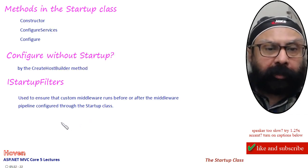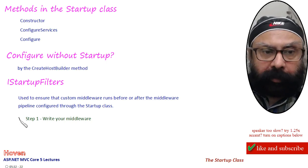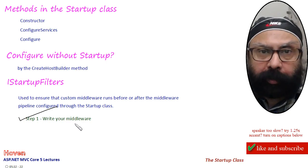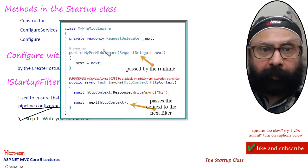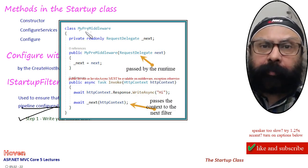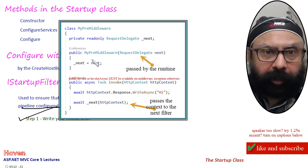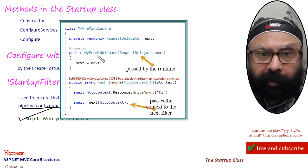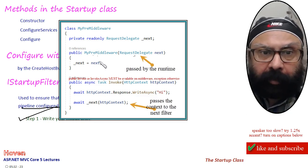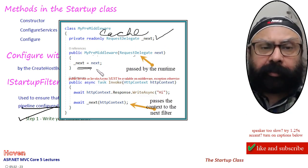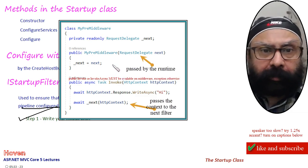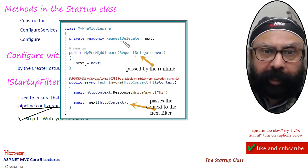There are various steps. Step 1 is to write your own middleware — the code you want to run before the middleware pipeline configured through the startup class. This is a simple class called MyPreMiddleware. All middleware classes are by convention appended with 'Middleware', though it is not compulsory. The constructor will receive a RequestDelegate, which is passed by the runtime, and we cache it as a read-only private. This is the skeleton template for writing your own middleware.